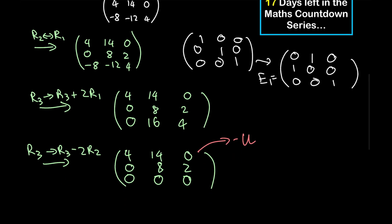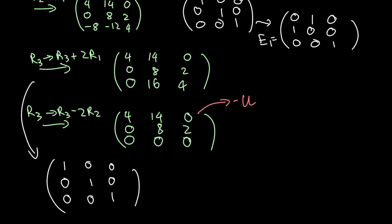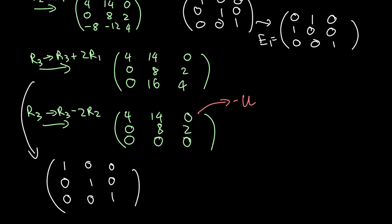For E2, we apply the operation row 3 replaced by row 3 plus 2 times row 1 to the identity matrix. The first entry of row 3 becomes 0 plus 2 times 1, which is 2; the second entry becomes 0 plus 2 times 0, which is 0; and the third entry becomes 1 plus 2 times 0, which is 1. So E2 is the identity with row 3 equal to 2, 0, 1.